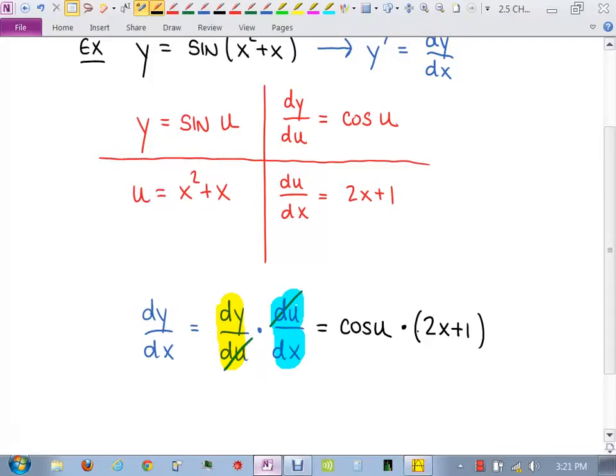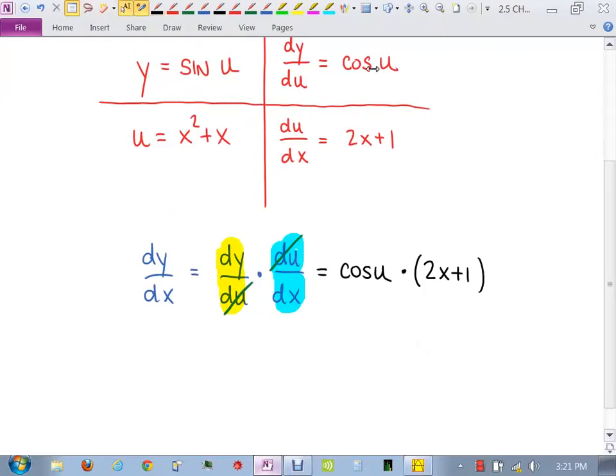So it looks like the derivative of y with respect to x, which is what we wanted, should be this part right here in the table times this part. The only issue I have right now is that my final answer has a u in it, and I should have x's. All x's. So how can I replace this u? What is u? x squared plus x. And that's sitting inside the cosine, isn't it? So that u right there became this, and that's just from the definition of what u was right there in the top, the left side up there. And then I still have sitting next to that what? 2x plus 1. And that's our final answer.